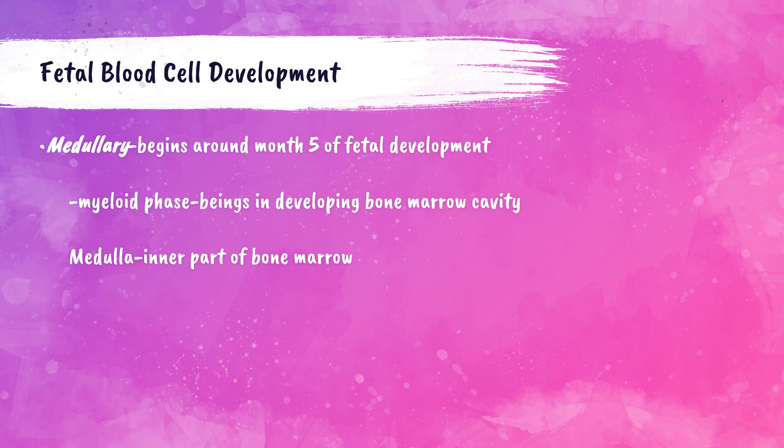The last phase of fetal blood cell development is called the medullary phase. Around five months after fertilization, hematopoiesis shifts from the liver to the bone marrow. The medulla is the inner part of the bone marrow, hence the name medullary phase. Myeloid cells are the first to develop here and mature into adult blood cells as basophils, eosinophils, erythrocytes, monocytes, neutrophils, or platelets — basically everything except lymphocytes.